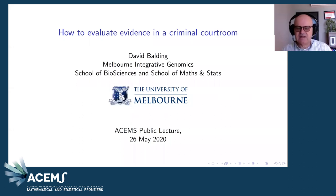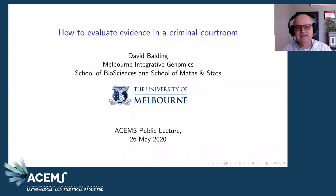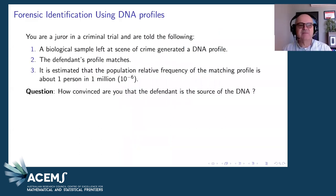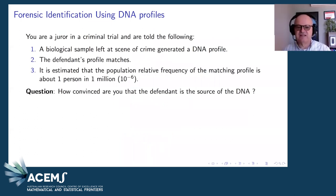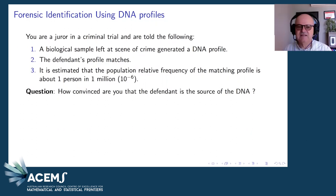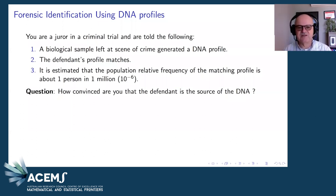Most of my career was spent in the UK, and I'll give you some experience from courts in and around London and also in Scotland. I want to start off with some questions for you, coming from a maths and stats background. So have a little think about this: you've got some evidence at the scene of a crime, you've got a DNA profile matching, the population relative frequency of the profile is one in a million. How convinced are you that you've got the right guy?